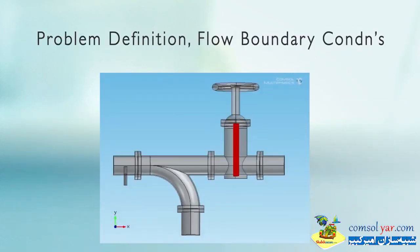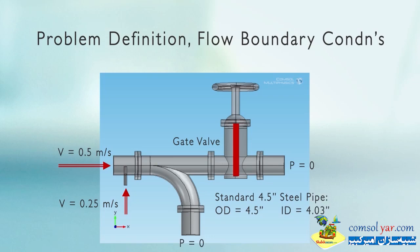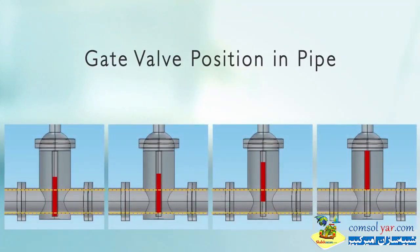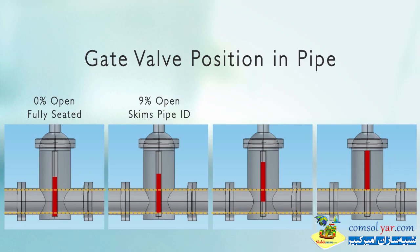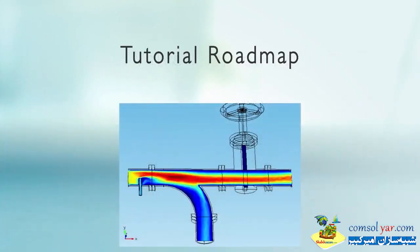The problem has velocity coming in at the main inlet at 0.5 meters per second, a feeder stream at 0.25 meters per second, a gate valve, and pressure equals zero on the outside. This is standard 4.5-inch steel pipe. The valve has a 5-inch total travel and seats in a recess. When fully closed there's no flow; at 9% open it skims the inside; at 50% open it's not at midline; at 91% open it skims the top of the pipe.